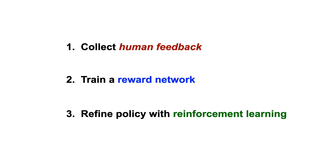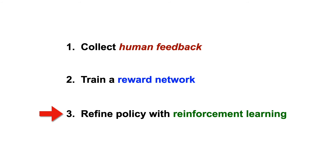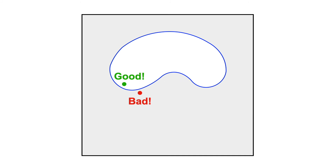To sum it up, here's the approach we've described so far: we first have humans rate a bunch of text, we then train a reward network to predict human ratings, and then refine the LLM with reinforcement learning. But there are many variants to this basic approach.